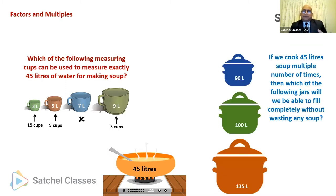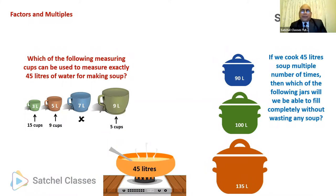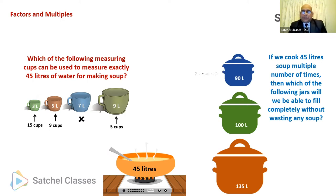Here's another question. Now that you have made 45 liters of soup, you're allowed to make it multiple times. If we cook 45 liters of soup multiple times, which of the following jars will be able to fill completely without wasting any soup? Can we fill the 90-liter jar? Yes, because if you make 45 liters of soup twice, 45 and 45 makes 90, so we can fill it completely.